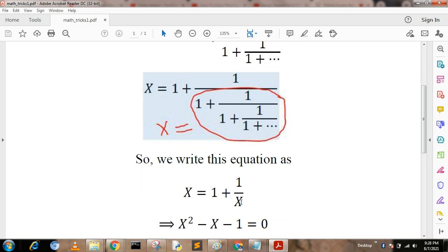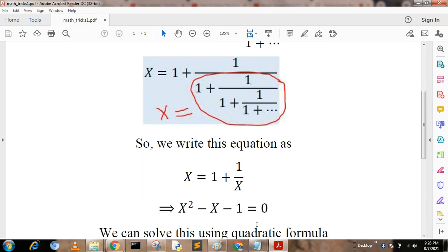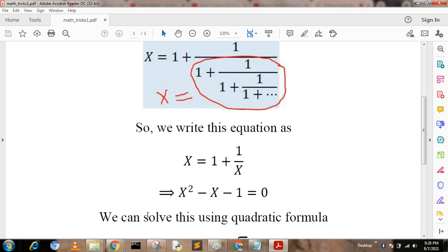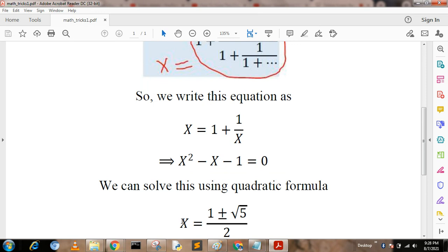Now we solve this value and we get the equation as x squared minus x minus one equals zero. This is a quadratic equation, so we use the quadratic formula and we get the value x equals one plus minus root of five by two.